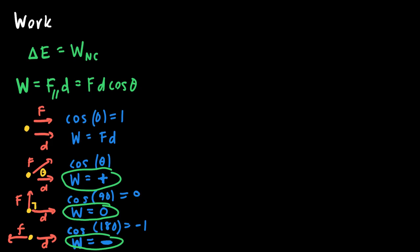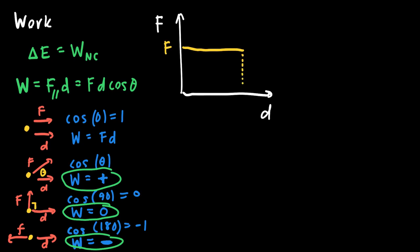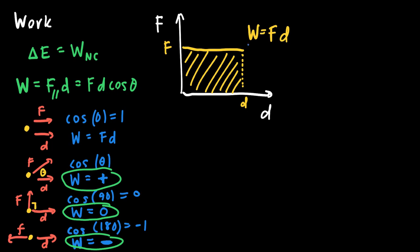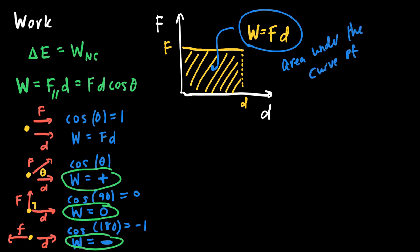Now let's think about work in a different way. Consider a graph showing force versus position. If there's a constant force acting on an object causing it to move through a displacement D, the area under that curve is a rectangle. The area of that rectangle is its length times its width — D times F — which equals F times D, which equals work. So another way to find how much work has been done on an object is to find the area under the curve of a force versus position graph.